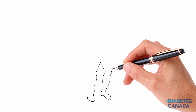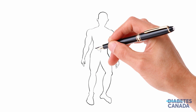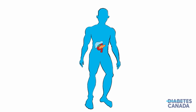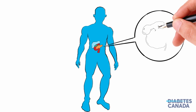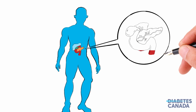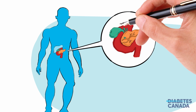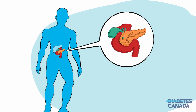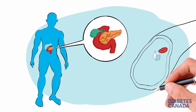Diabetes is a condition in which the body either cannot produce insulin or cannot properly use the insulin it does produce. Insulin is a hormone produced by an organ called the pancreas that controls the amount of glucose or sugar in the blood. We can't live without insulin. The body needs it to help store sugar to be used as energy.